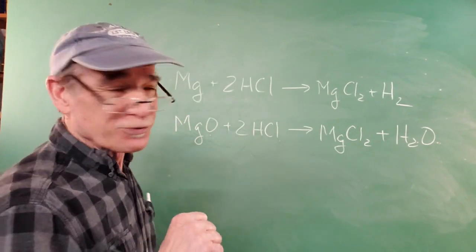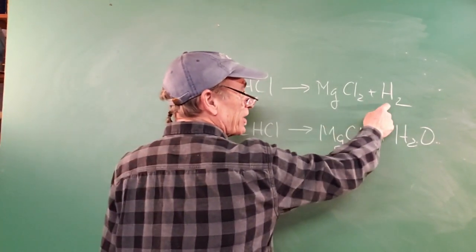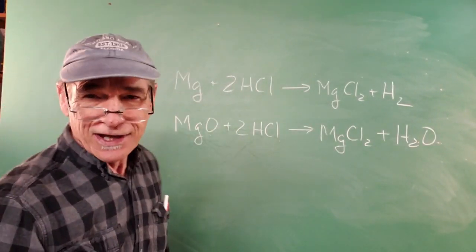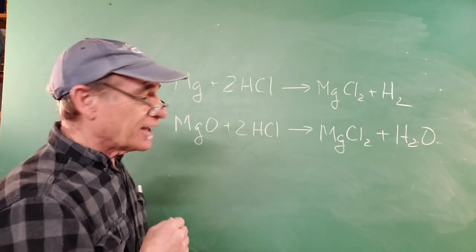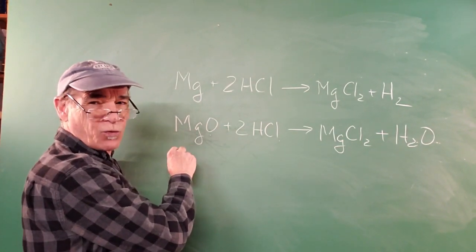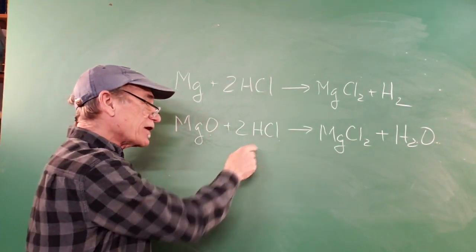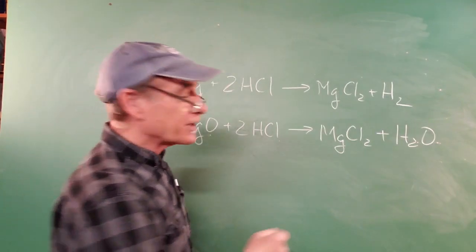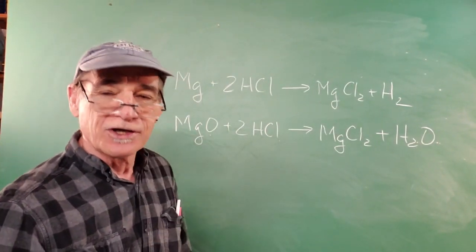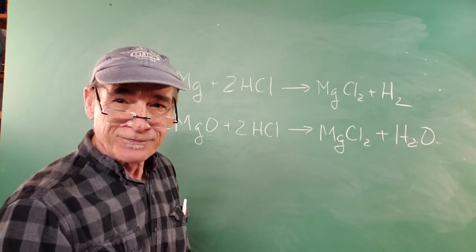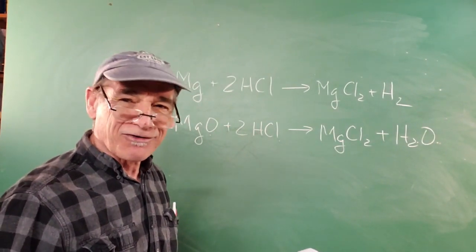We've got two reactions to run. One is familiar — we used it in the ideal gas constant lab. We're going to react magnesium and hydrochloric acid to make magnesium chloride and hydrogen gas. This time we're letting the hydrogen gas go, but it's a nice exothermic reaction so we can get a good measurement. Then we're going to react magnesium oxide — the ash created when we burned magnesium in lab — with hydrochloric acid. It reacts exothermically to make magnesium chloride and water, giving a significant temperature change.